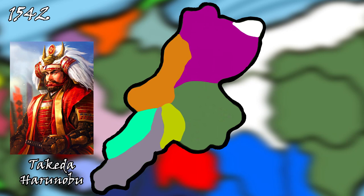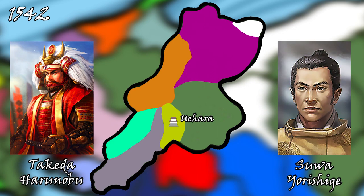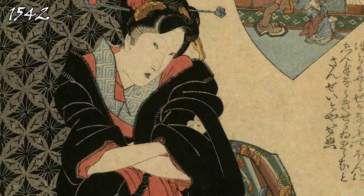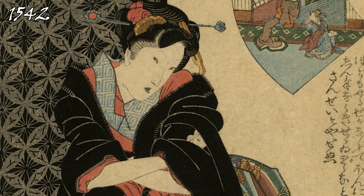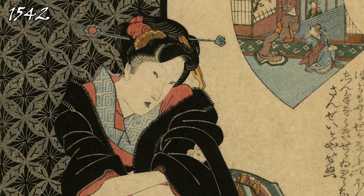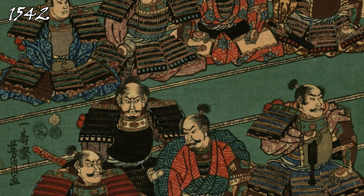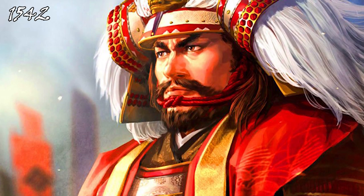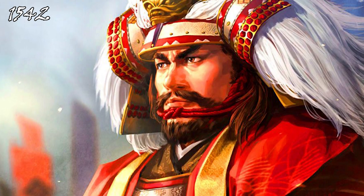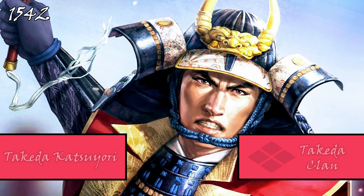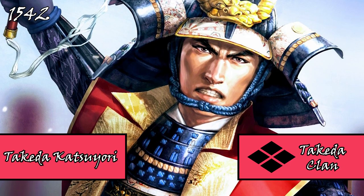This cleared the path for Haranobu to lay siege to his brother-in-law Yorishige and eventually seize his castle of Uehara. Yorishige would be captured and sent back to Kai, where he would later be ordered to commit seppuku. Haranobu would eventually end up taking Suwa Yorishige's daughter — his own niece — as a mistress. Many scoffed at the idea and said it was a bad omen, but Haranobu ignored them all. She would later give birth to the future lord of the Takeda clan, Katsuyori.